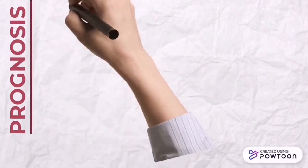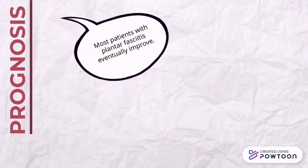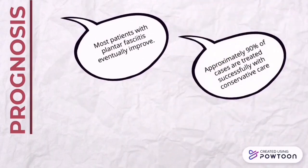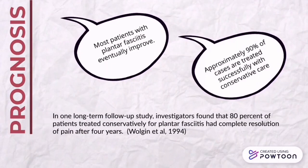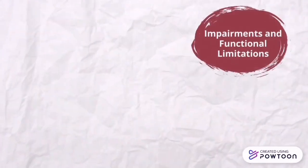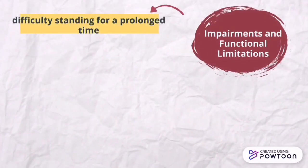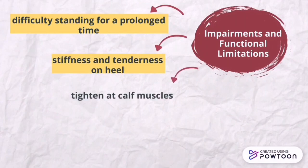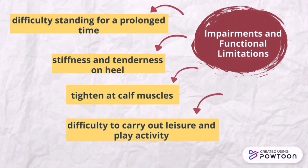The prognosis is positive — most patients with plantar fasciitis eventually improve. Approximately 90% of cases are treated successfully with conservative care. In one long-term follow-up study, investigators found that 80% of patients treated conservatively had complete resolution of pain after 4 years. Regarding impairments and functional limitations, patients may have difficulty standing for prolonged periods, stiffness and tenderness in the heels, tightness in calf muscles, difficulty carrying out leisure and play activities, and loss of dorsiflexion.